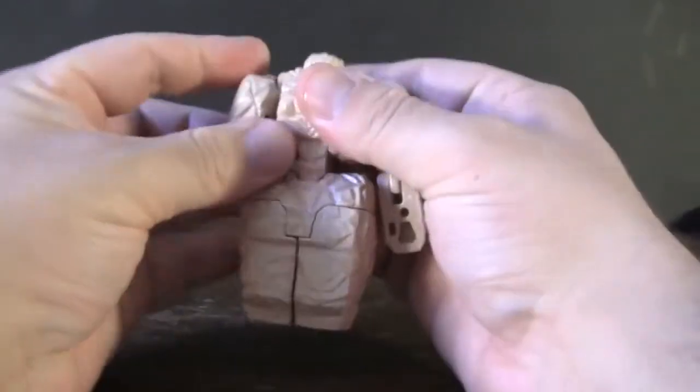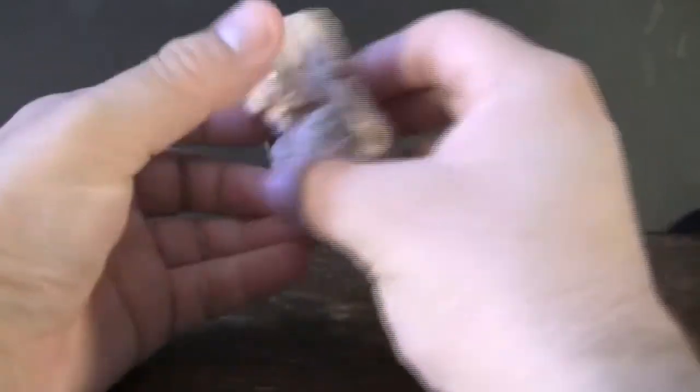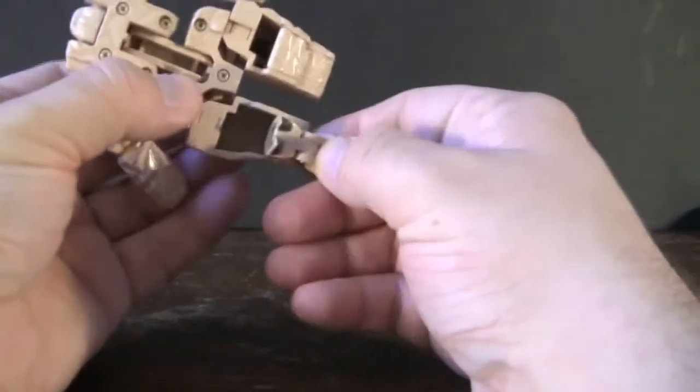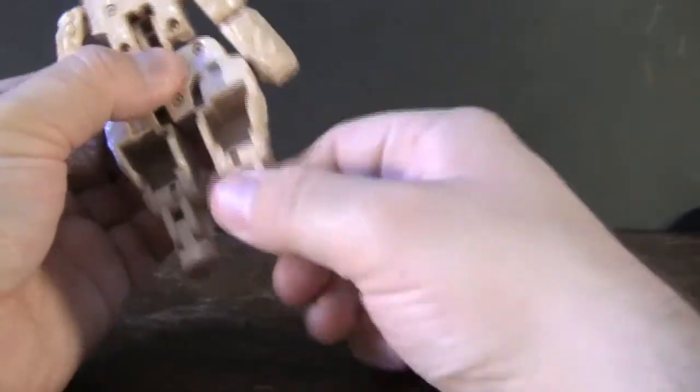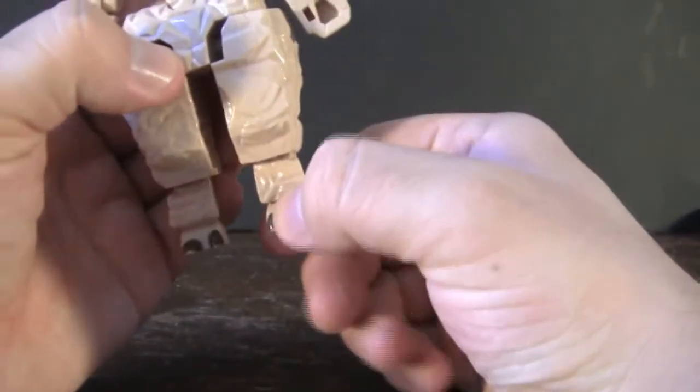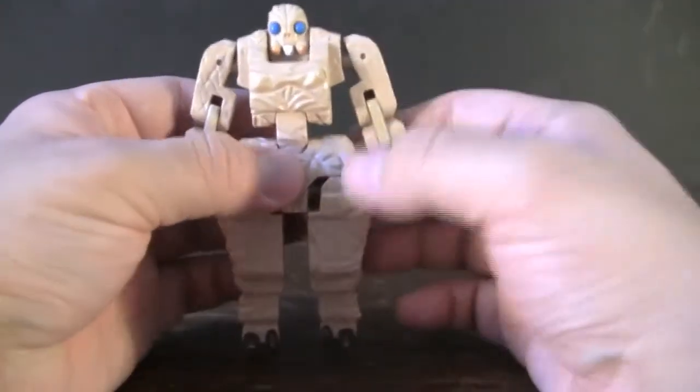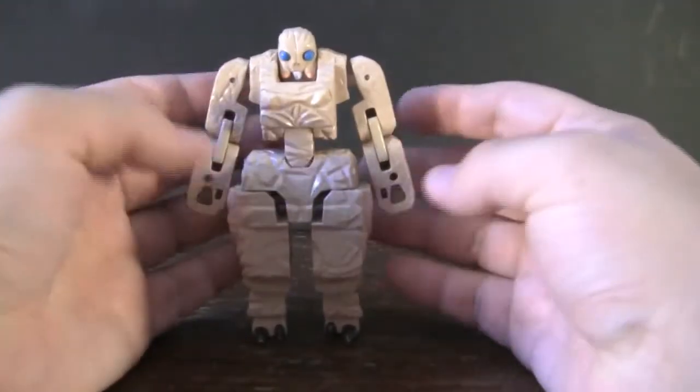Just fold the arms out like this and then bring the hips out the rest of the way here. After that, you can bring his little feet out here. He's got some weird little hoofy toes right there, and then last but not least, bring his head up and that's his robot mode.